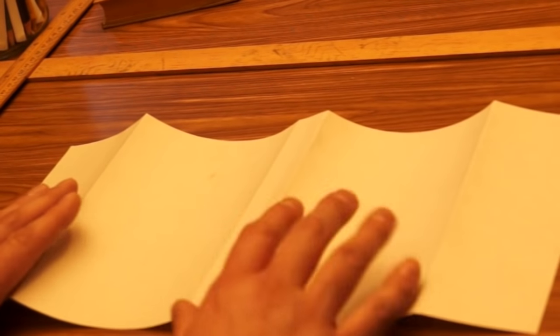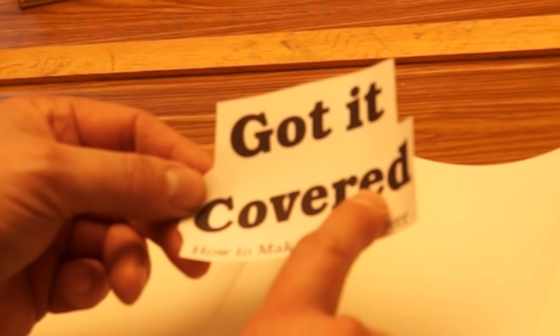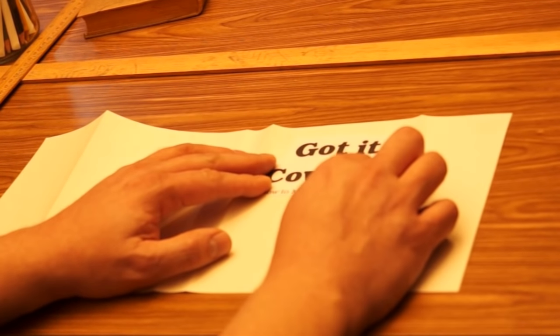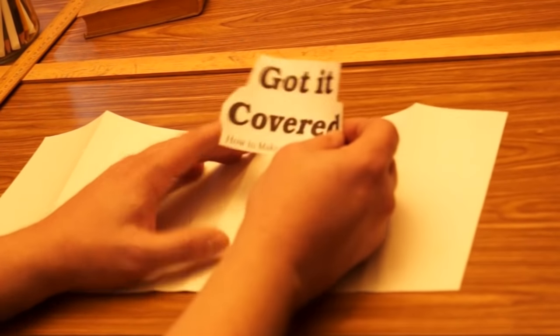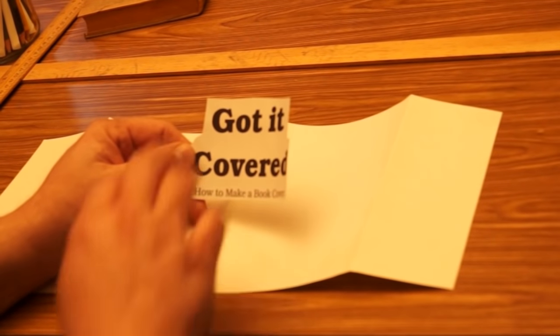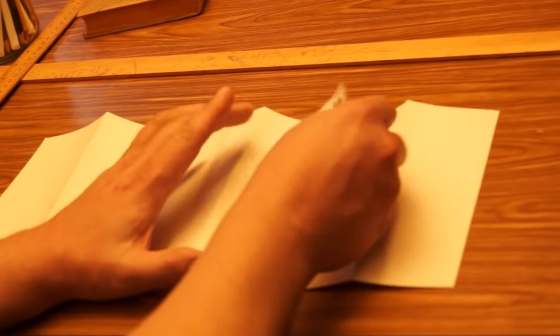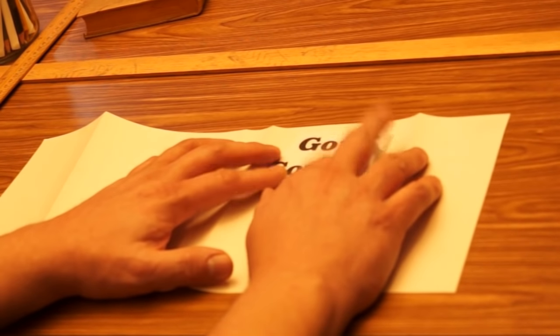But once you have decided what information you're going to put on the book cover, then there's different ways to go about it. Number one, you could just draw everything out, write everything out and color it. You can do what I've done and actually type out your information and print it out and cut it out and then glue it down, paste it down. And if you do this, the neat thing about doing it this way is your letters look all nice and neat. You can use different fonts, different styles of lettering and it's just a matter of getting things the right size to go in that place.